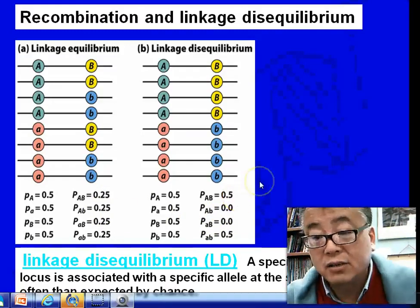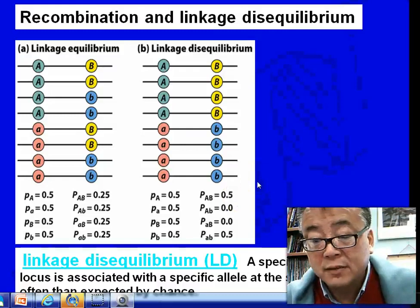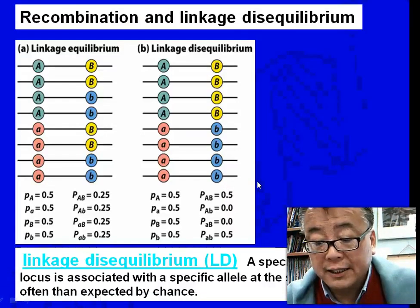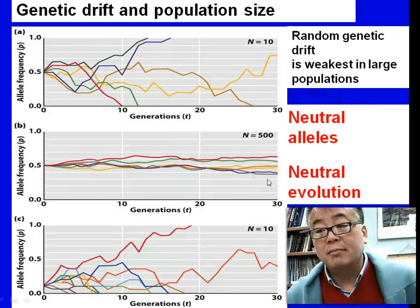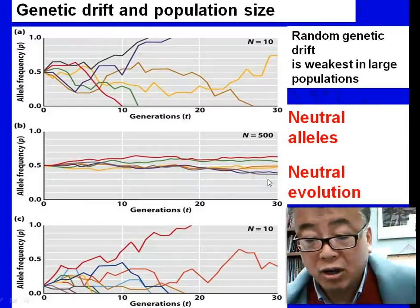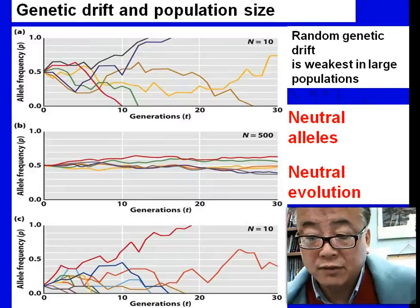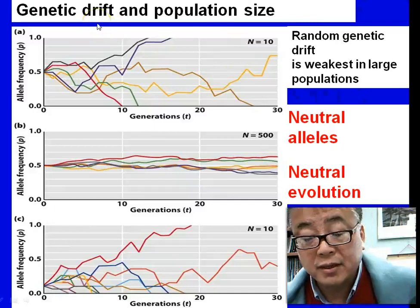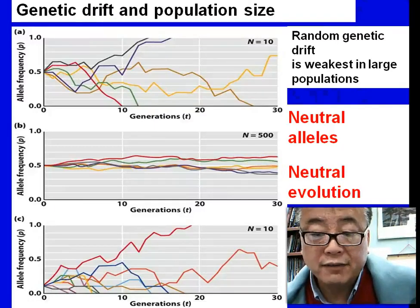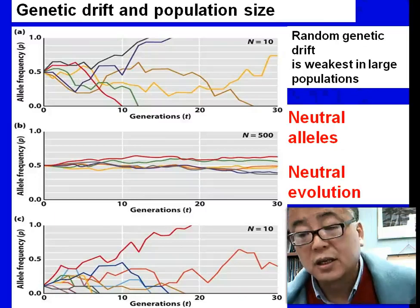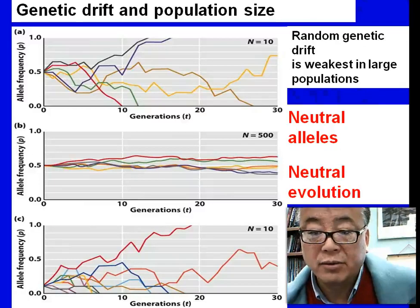That is the situation of linkage disequilibrium. This can be a measurement, or can be the reflection of allele frequency and the distribution of these alleles. Remember, when we talk about Hardy-Weinberg equilibrium, there is another factor called genetic drift that can also lead to not conforming to Hardy-Weinberg equilibrium.